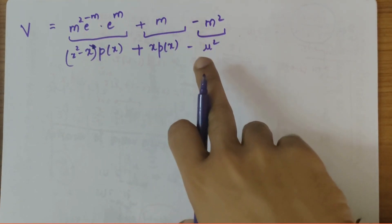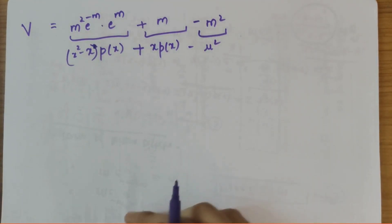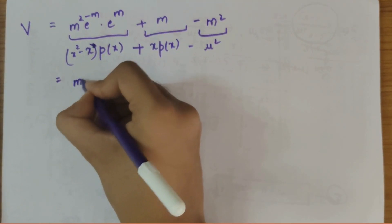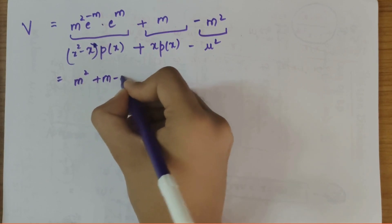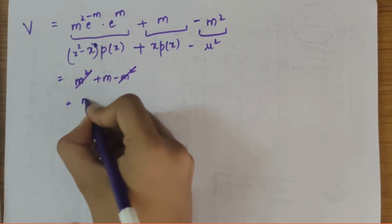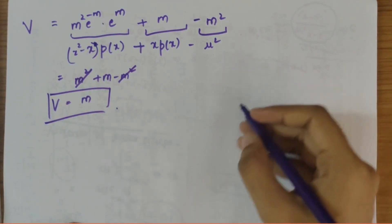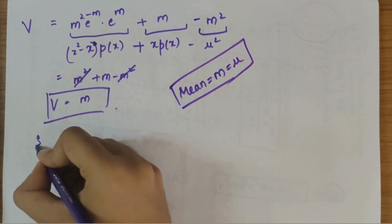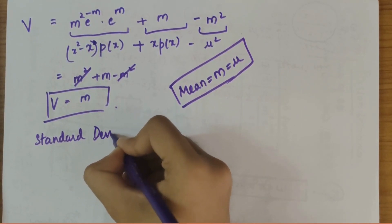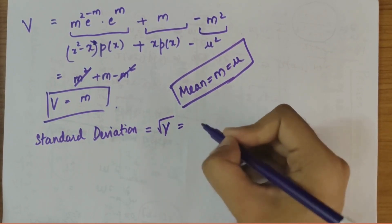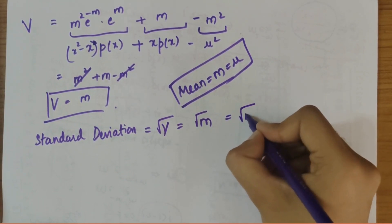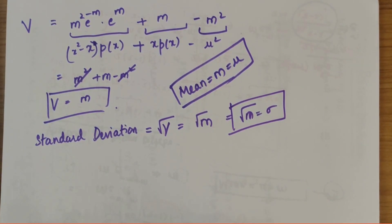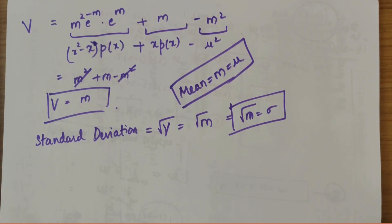So the x(x−1)·P(x) term equals m²·e^(−m)·e^m = m². The x·P(x) term equals m (from the mean), and μ² = m². Therefore variance = m² + m − m² = m. Mean was equal to m, and variance is also equal to m. Standard deviation = √variance = √m. I hope you have understood how to derive the mean, variance, and standard deviation of Poisson distribution.